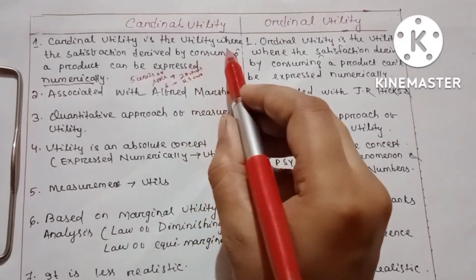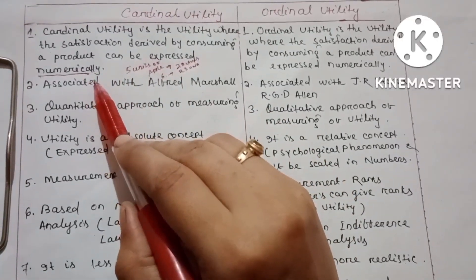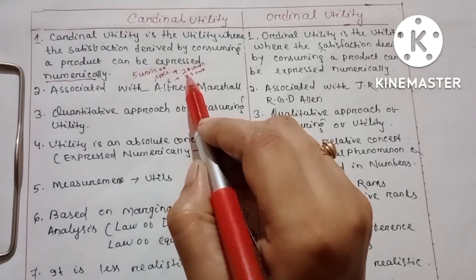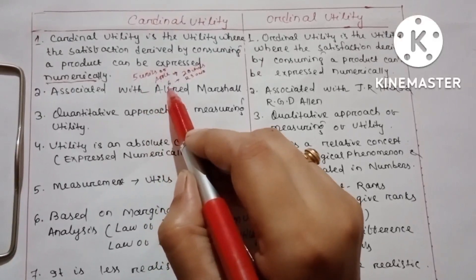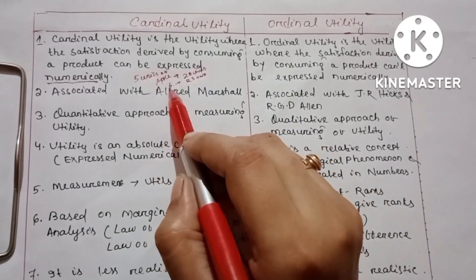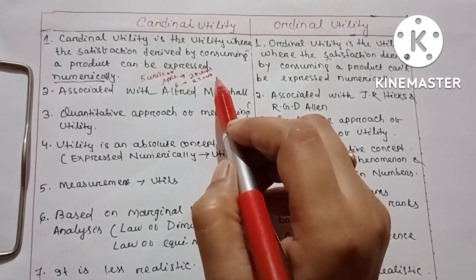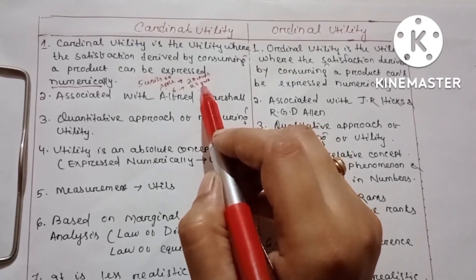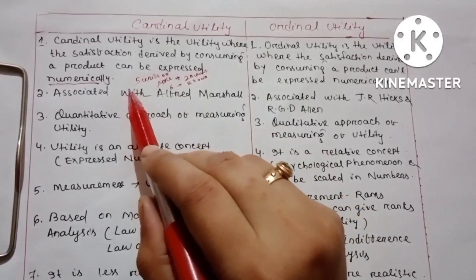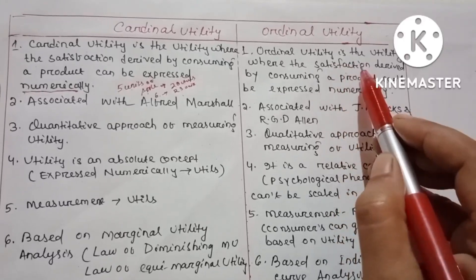Cardinal utility is the utility where the satisfaction derived by consuming a product can be expressed numerically. For example, suppose we are consuming 5 units of apple and deriving 20 utils, and by consuming the 6th unit of apple I am deriving 23 utils. So the marginal utility of the sixth apple is 23 minus 20, that is 3 utils. Since we are expressing the satisfaction derived by consuming that product numerically, it is called the cardinal utility approach.